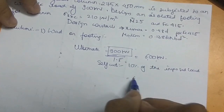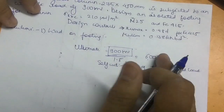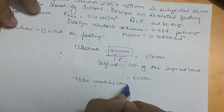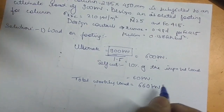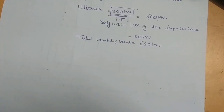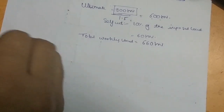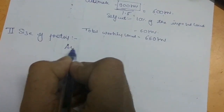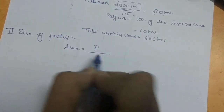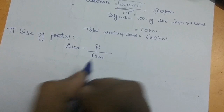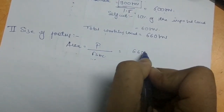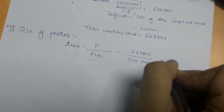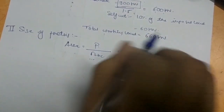The self weight is 10% of the imposed load, so 10% of 600 kN is 60 kN. Adding these gives a total working load of 660 kN. The second step is to find the size of the footing: area = load divided by safe bearing capacity = 660 / 210 = 3.14 m².